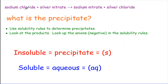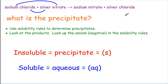Here we have sodium chloride plus silver nitrate, giving sodium nitrate and silver chloride. Now, which one of these is the precipitate? What we're going to do is look at our solubility rules to determine our precipitates. We look at our products — remember, products are on the right — and we look up the anions in the solubility rules. If your product is insoluble, that means it is a precipitate and does not dissolve in water, so it gets an S for its state of matter. If it's soluble, it will dissolve in water and you have an aqueous solution.